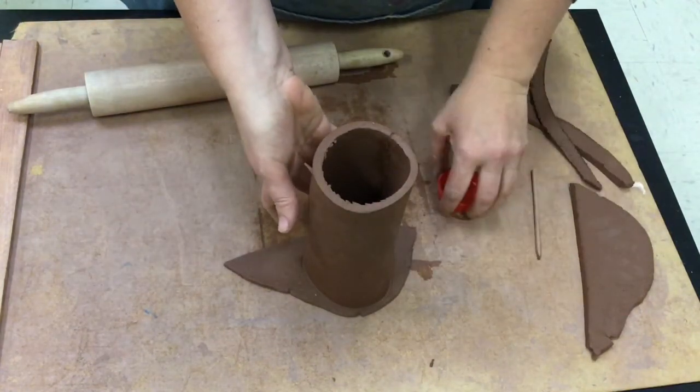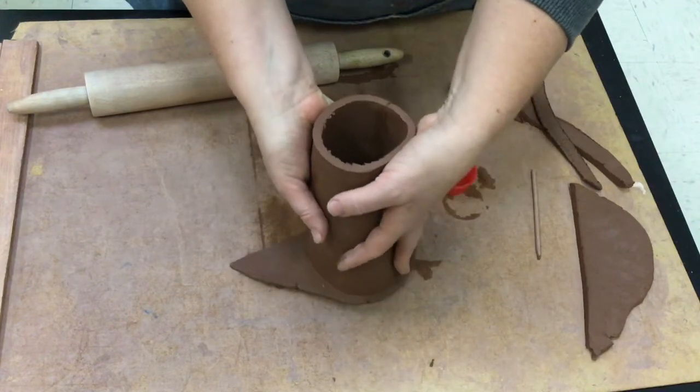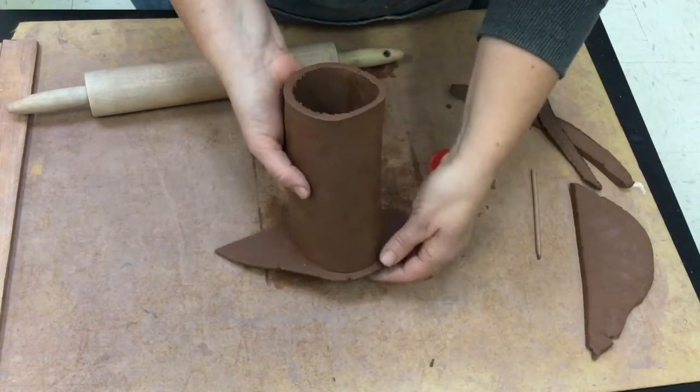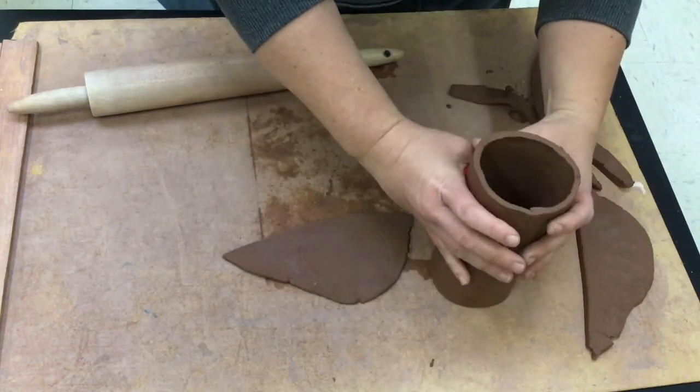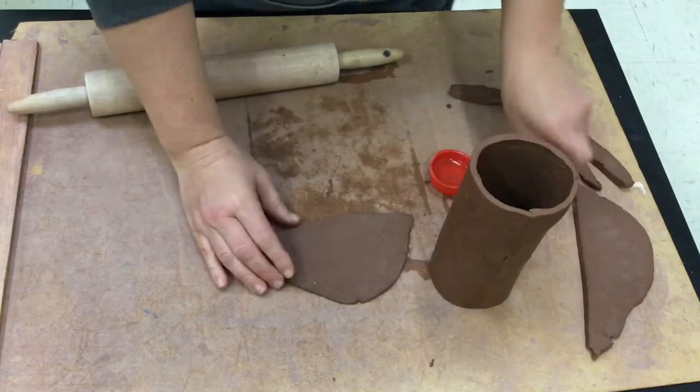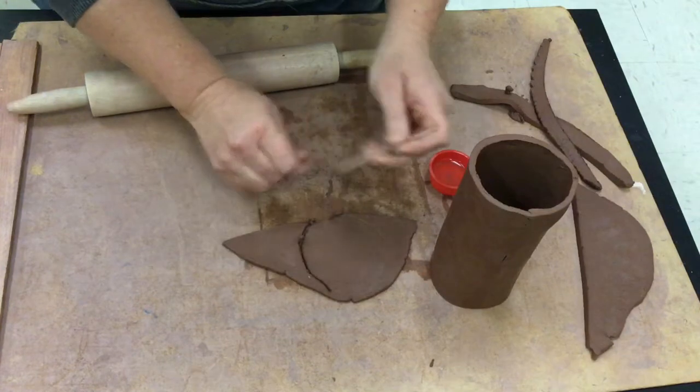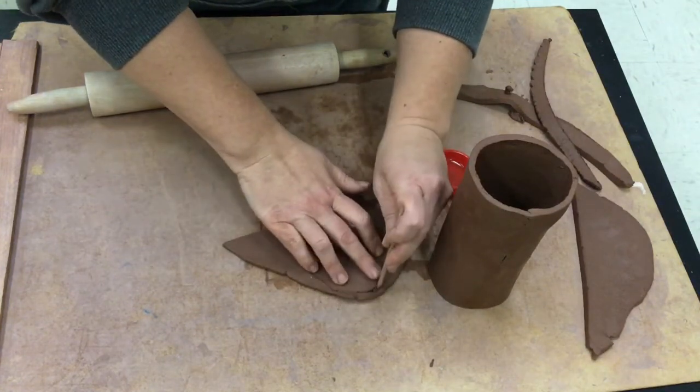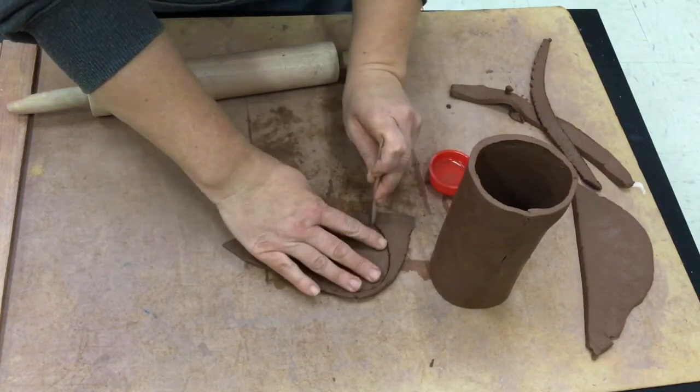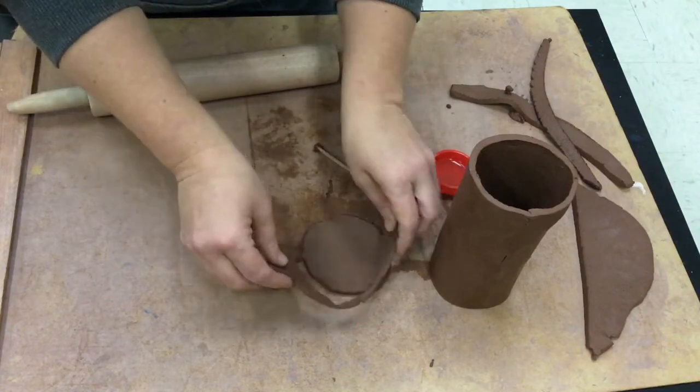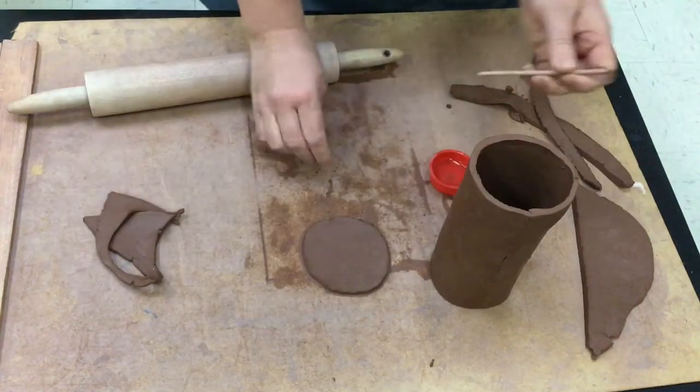So now I'm going to flip this over very carefully and I'm going to put the part that was down up. So I can now cut this out doing my best to follow the line and then I'm going to slip and score.